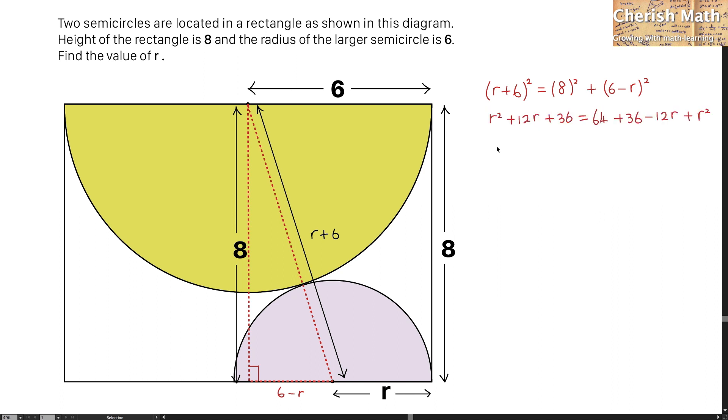Expanding it, here is what I get. Rearranging the whole thing, I get a value of r is 64 over 24. Simplifying it, the value of r is 2 and 2 thirds.